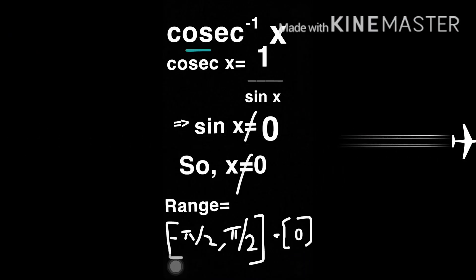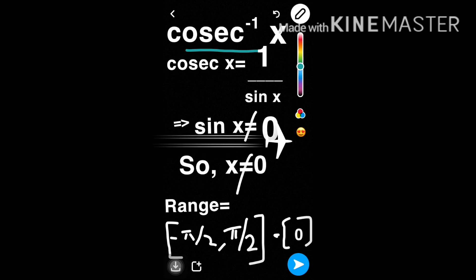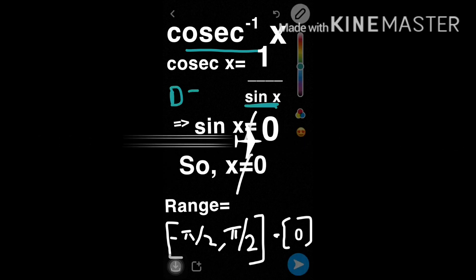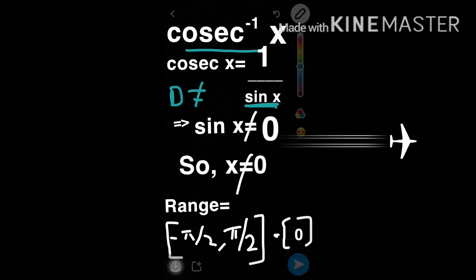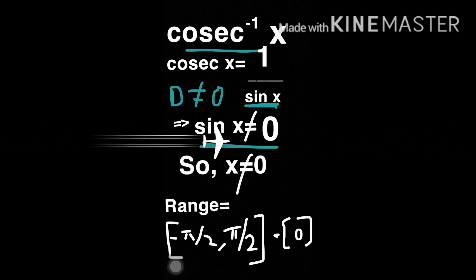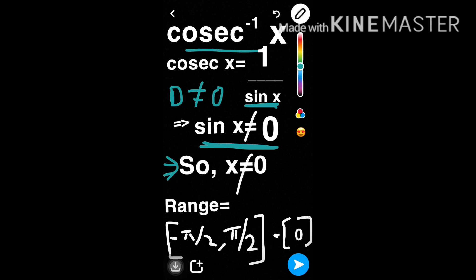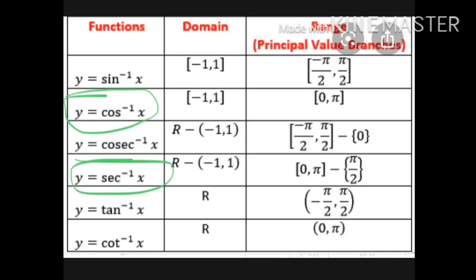Here is the proof. Cosecant x equals 1 upon sin x, as cosecant x is the reciprocal of sin x, and the denominator can never be 0. So here sin x cannot be 0. Sin x equals 0 at x equals 0, so x cannot be 0. Therefore, the range of cosecant inverse x is minus pi by 2 to pi by 2, excluding 0.